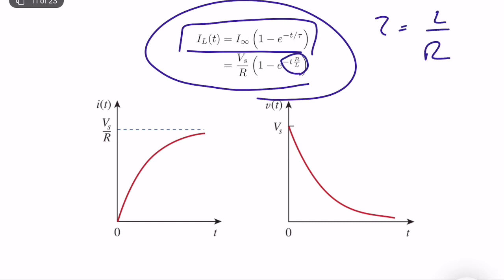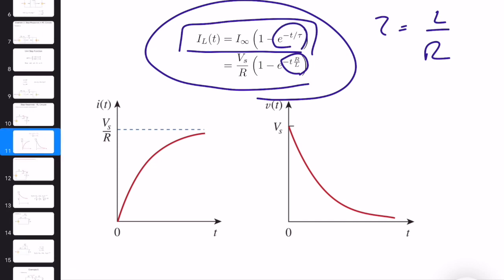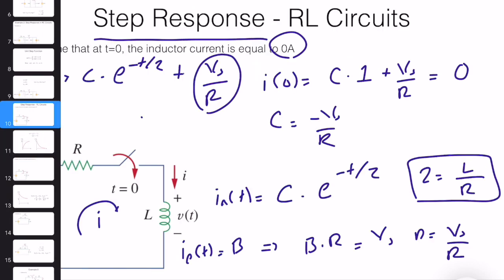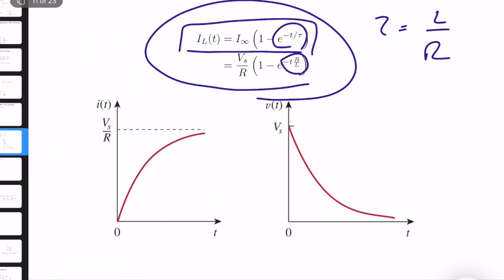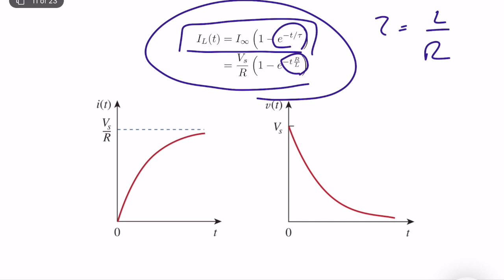Be careful: tau is equal to L over R. As you can see, I of T starts from zero and reaches its steady state — it's like a flipped exponential decay approach. It reaches its steady state as T goes to infinity. If you compute the voltage of the inductor by taking the derivative and multiplying by L, you will see it is an exponential decaying function, starting from Vs at T equals zero.